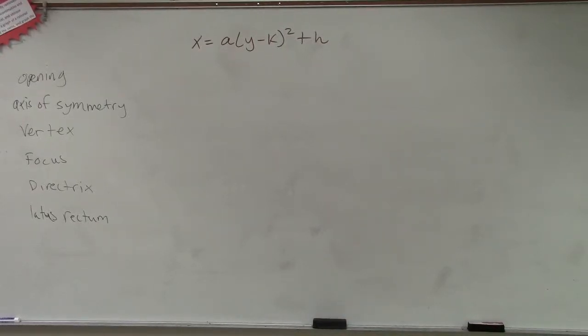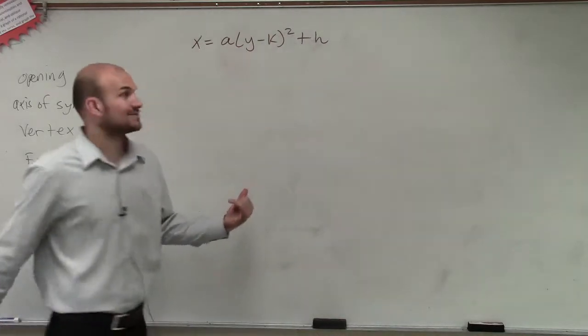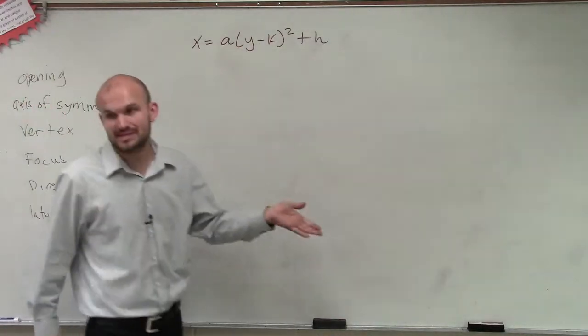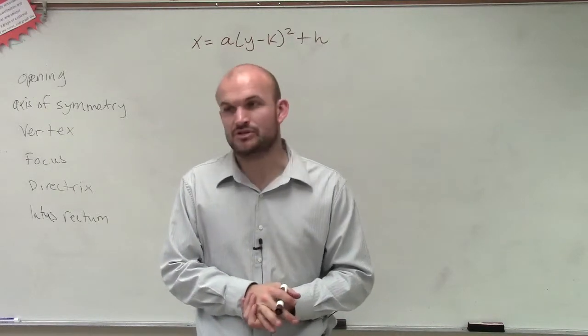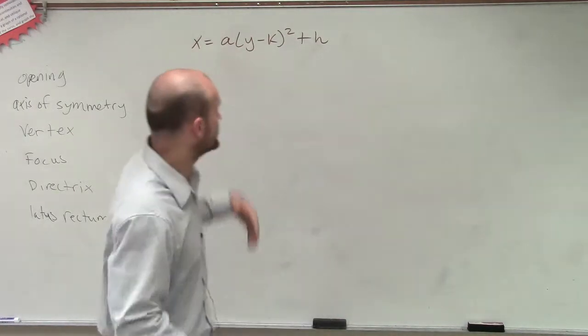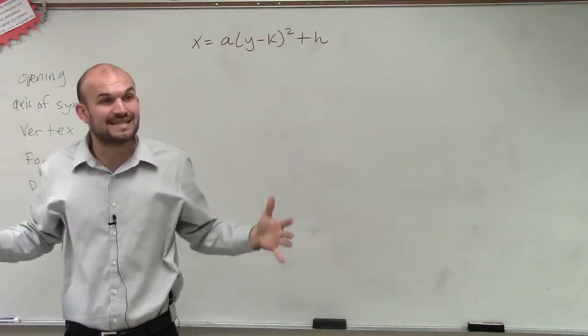All right. So yes, this is a little bit different than what we've done. Previously, we had y equals a times x minus h squared plus k. We were able to easily find the vertex, axis of symmetry, and so forth. But we knew that when it was always x squared, the graph either opened up or the graph opened down.